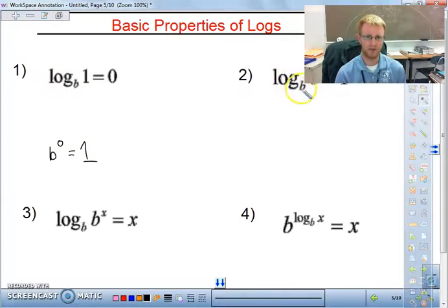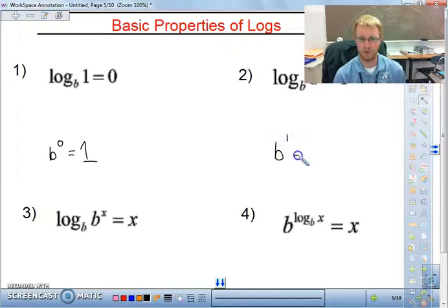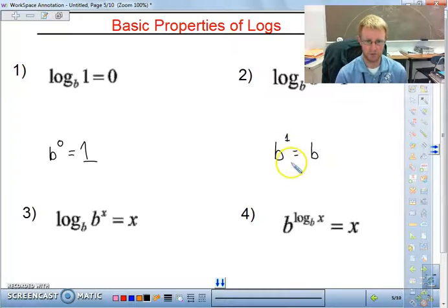Next one, log base b of b will be equal to 1. Essentially, your log base b and b are canceling out, but the reason for that working is because b to the 1 power is equal to b, always.